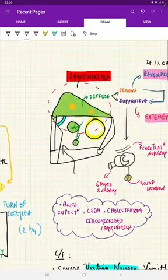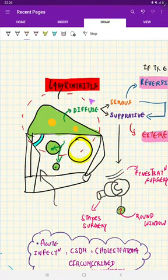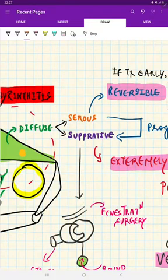Now we will be discussing about the classification of labyrinthitis, and classification is very simple. As we have seen, it is diffuse type of labyrinthitis or it could be a circumscribed type of labyrinthitis. In diffuse type of labyrinthitis, we have two things: one is serous and another is suppurative.